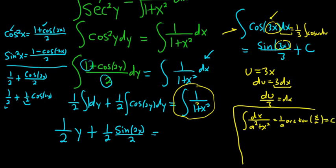So in this problem here, a is 1. So it's just 1 over 1, which is 1, so we don't write it. Then we get arctan of x over 1. So just arctan of x. And then we have the plus and the c.